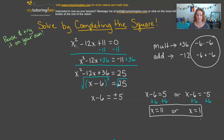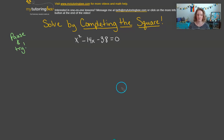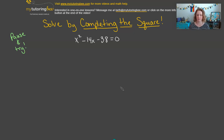You can check your work by plugging x equals 11 and x equals 1 back into the original equation to verify both satisfy it. Now I've got another one for you — a challenge problem: x squared minus 14x minus 38 equals 0. This one is a little different than the two we've done, so pause and try it on your own first.